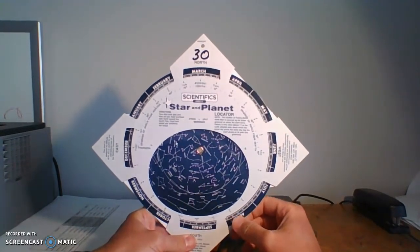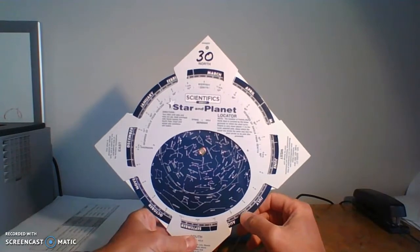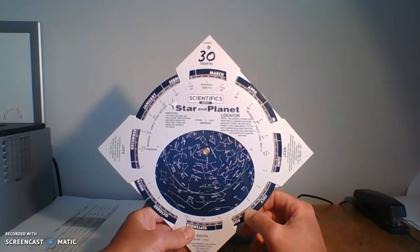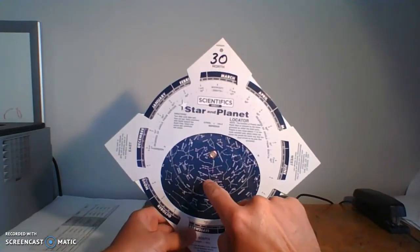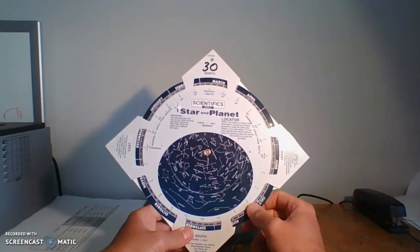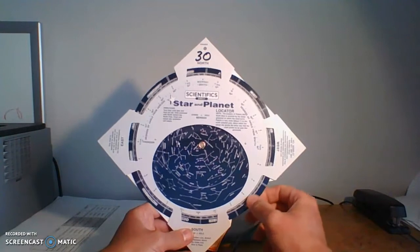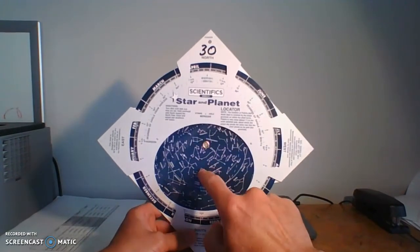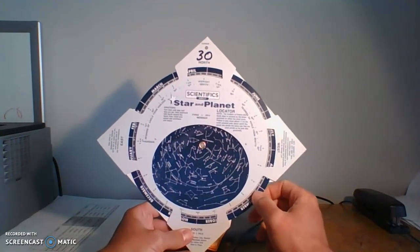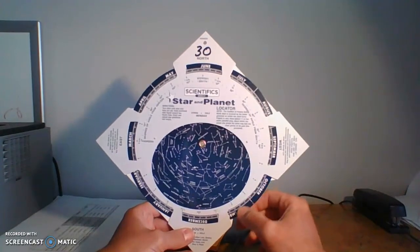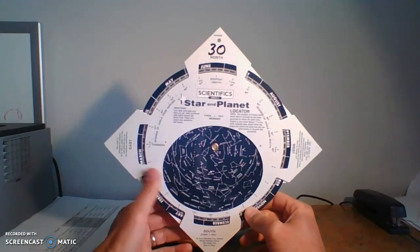So that's a quick little introduction to using the star and planet locator. The one last thing is that your zenith is right in the middle. So your zenith is what you would see right in the middle. So that's going to change, look for the zenith right at the middle. That's all we got for your star and planet locator.